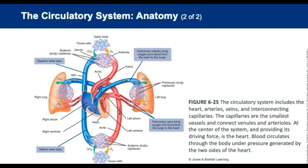This figure shows the circulatory system. Blue blood represents deoxygenated blood; red represents oxygenated blood, distinguishing the right side from the left side of the heart.